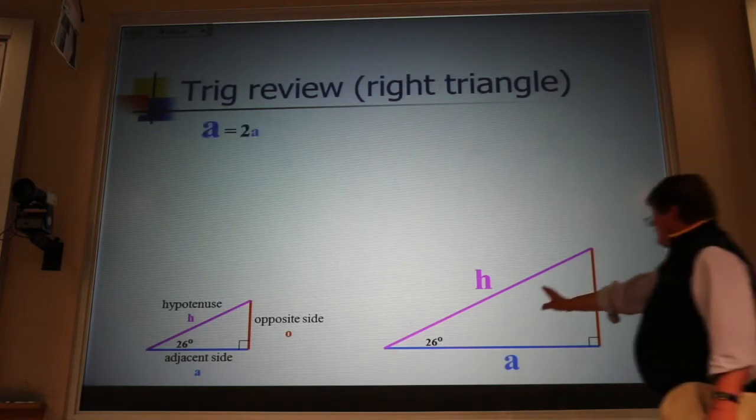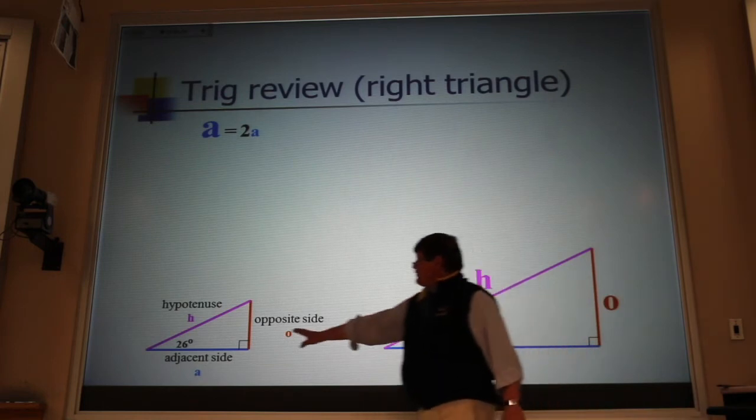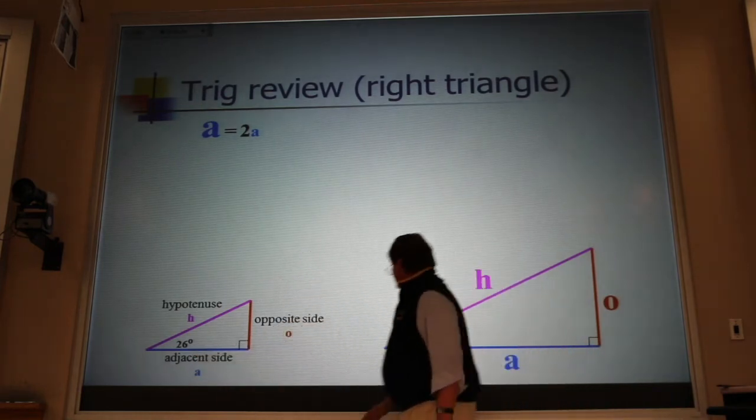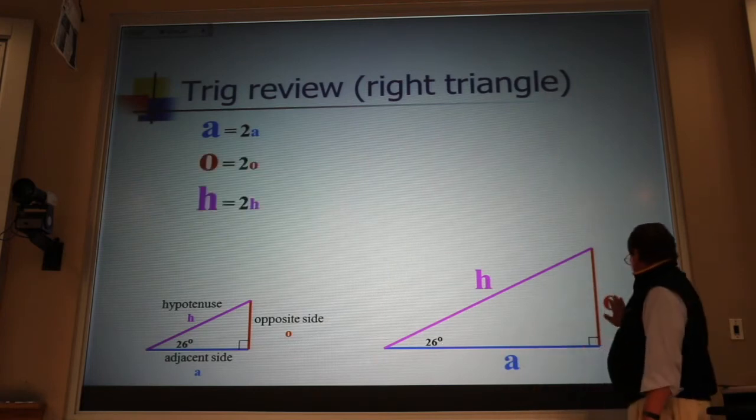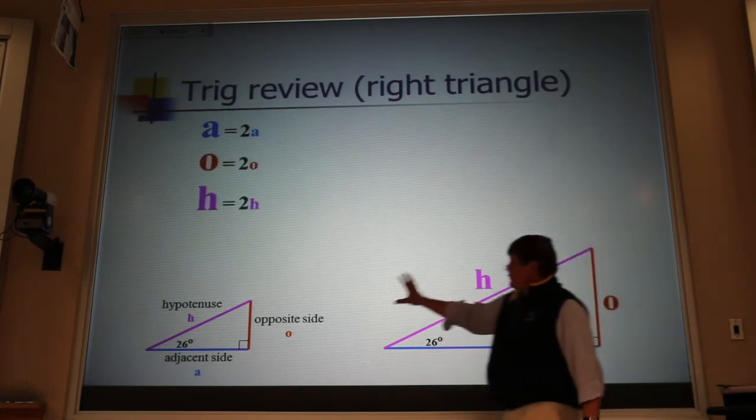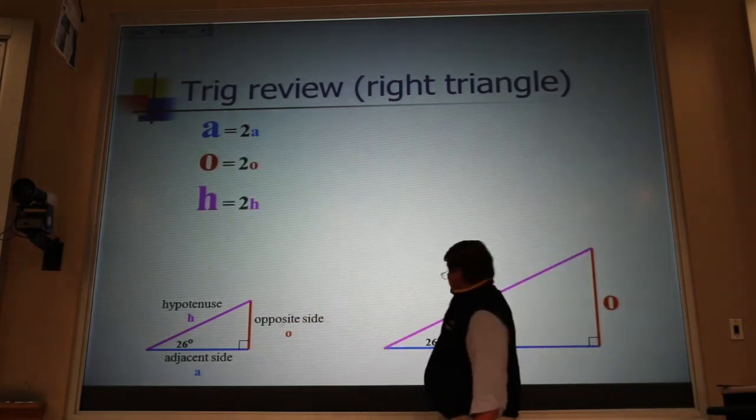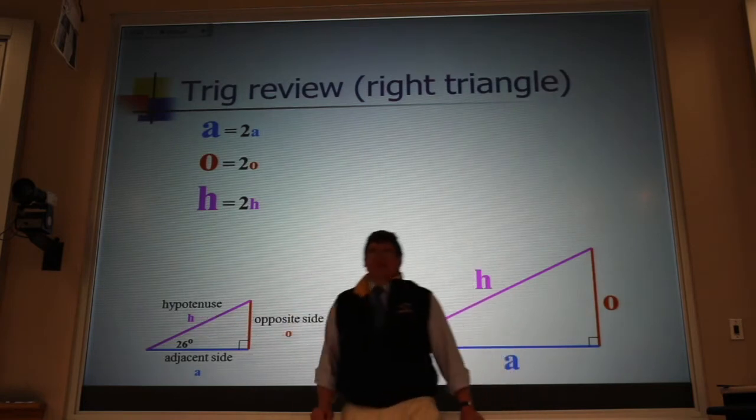In that case, the adjacent side here would be twice as bigger as that adjacent side. But also the same is true for the other side. This opposite side would be twice as big as that. The hypotenuse is twice as big as that.